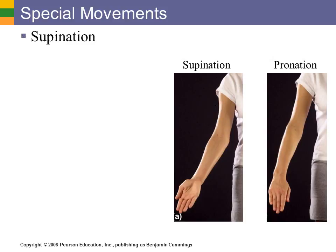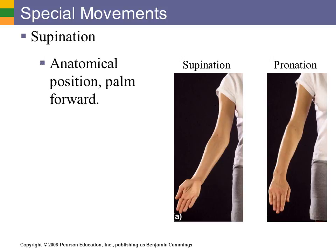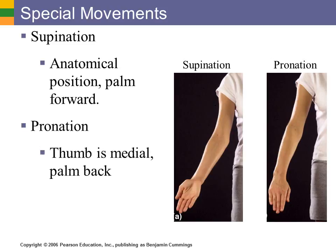Special to your forearm is supination and pronation. In supination, basically anatomical position, your palm is forward. Many people say that if you were going to hold a cup of soup, you have to have your palm up — that's supination. Pronation is the opposite: the thumb is going to be medial and your palm is going to face back. Some people say: do you want some soup? Put your palms up. Or push your palms down — no, I don't want any soup. So pronation is palm back, supination is palm up.